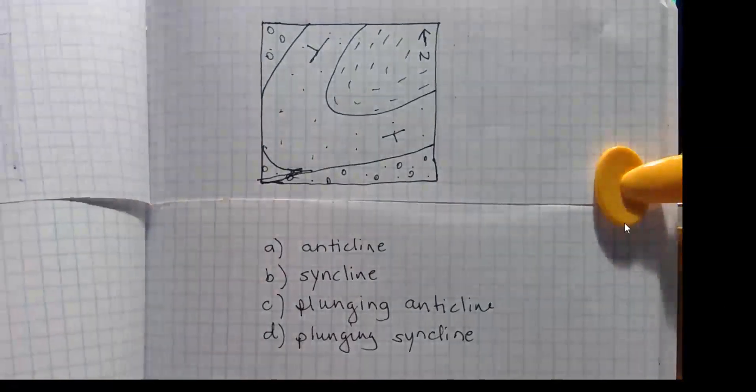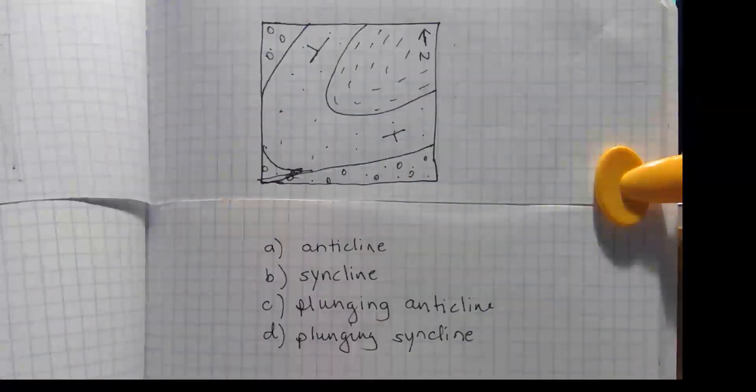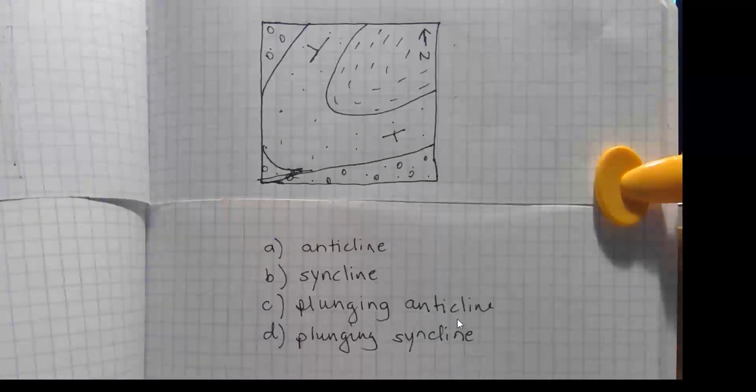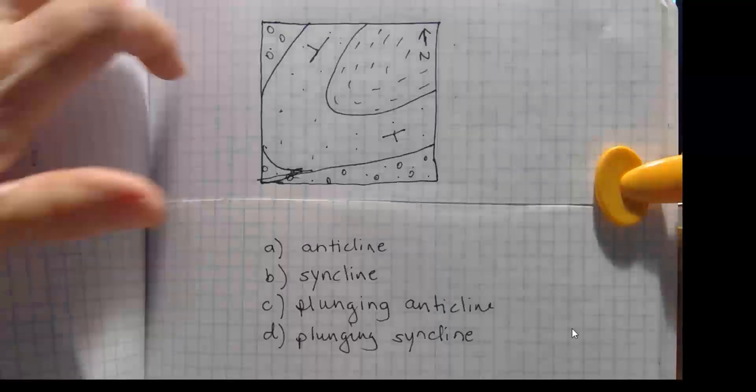How about another one? Similar question. What kind of fold lies in the subsurface underneath this geologic map? Same choices. Again, you have the strike and dip symbols. This time our outcrop patterns wrap around the fold axis. So that would be a plunging anticline. Plunging anticline C. I hope you chose that one.